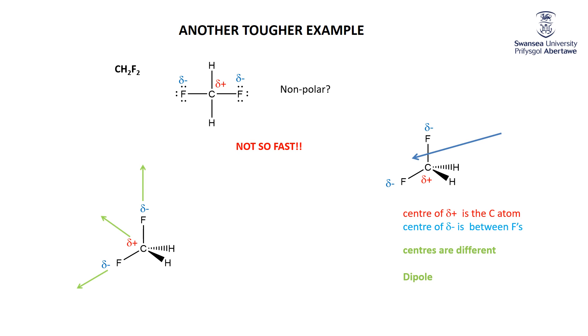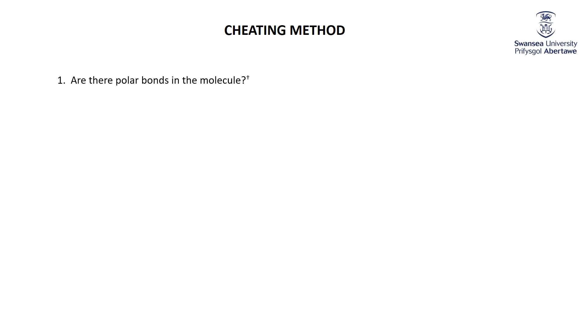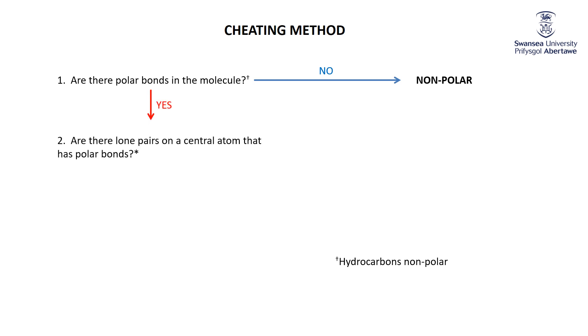Either way you analyze it, because the molecule is tetrahedral, CH₂F₂ is polar. Now, the quick method: first, are there polar bonds in the molecule? If no, it cannot be polar. At this level, we consider hydrocarbons non-polar — assume all carbon–hydrogen bonds cancel each other out. If there are polar bonds, then ask: are there lone pairs on the central atom that has those polar bonds? Lone pairs distort the geometry, making it impossible for polar bonds to cancel in most cases.